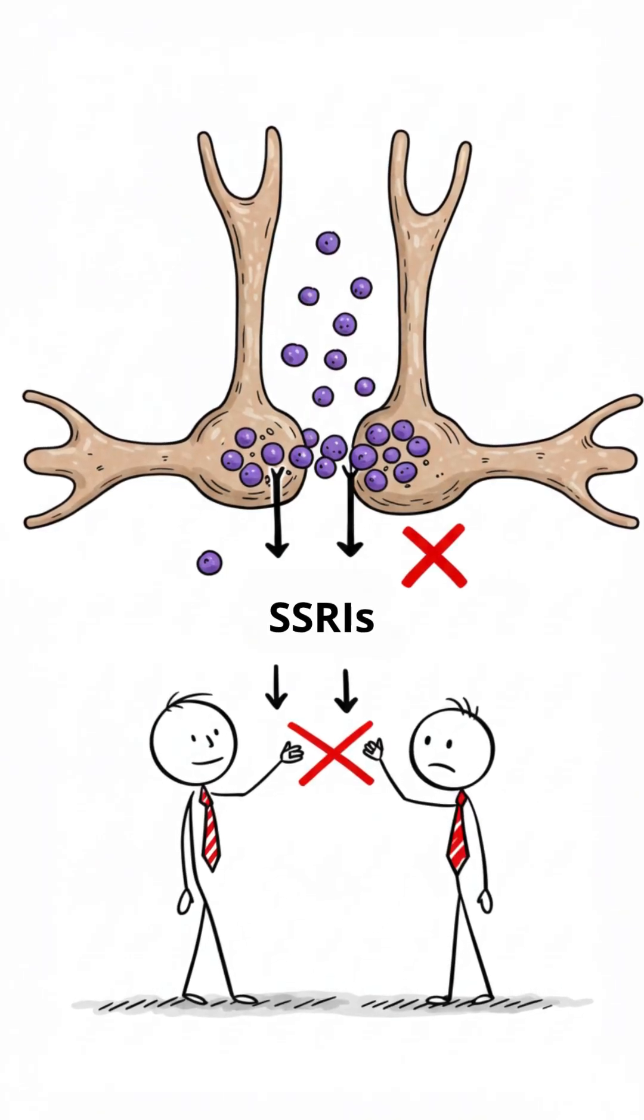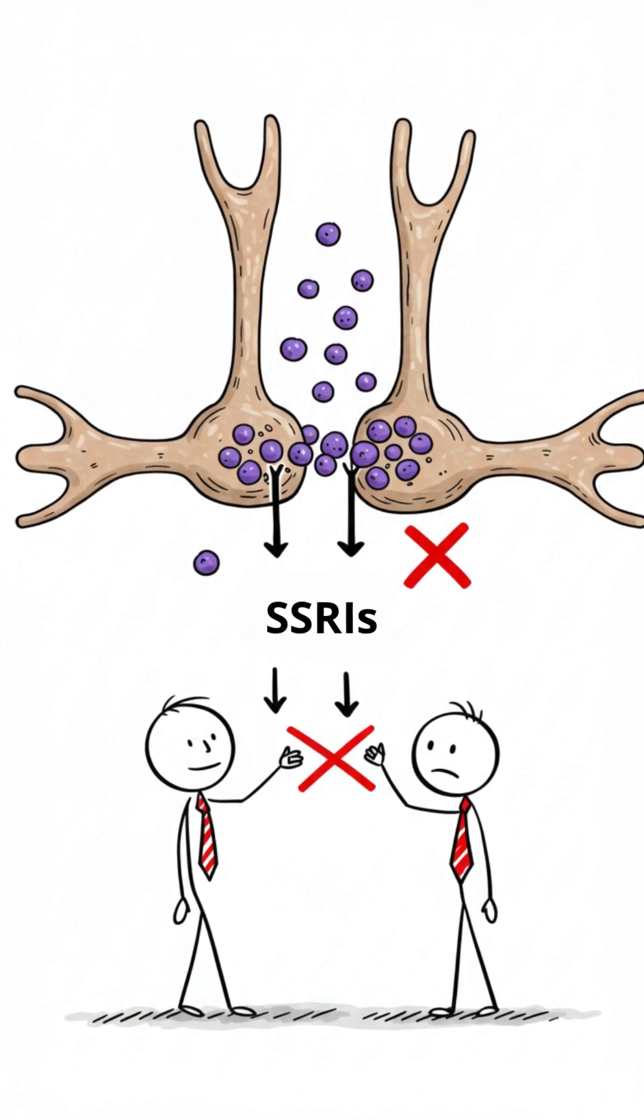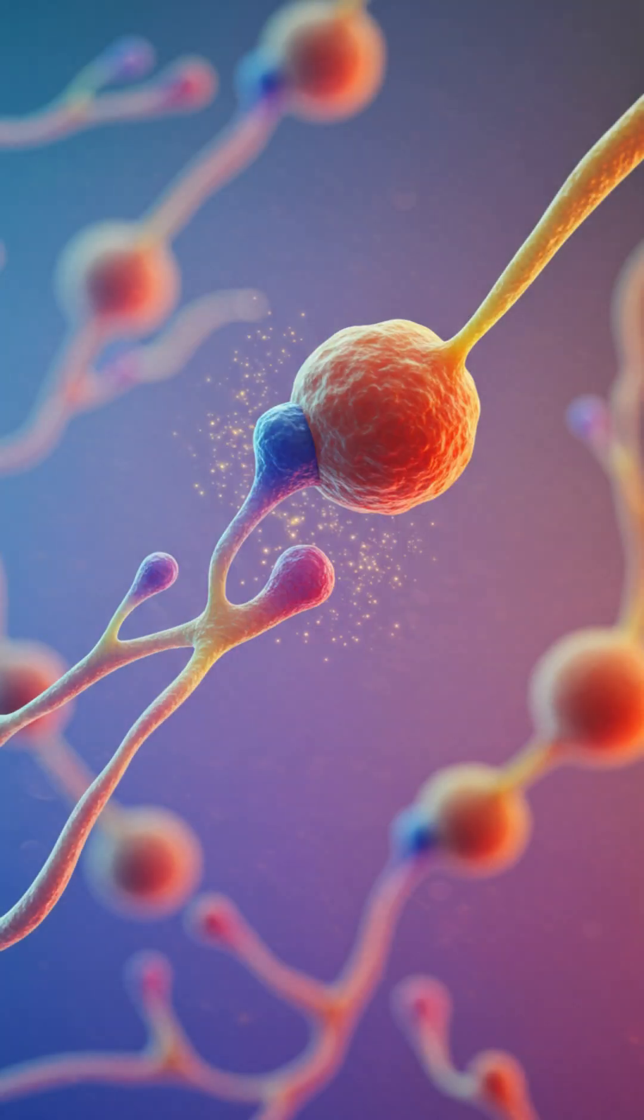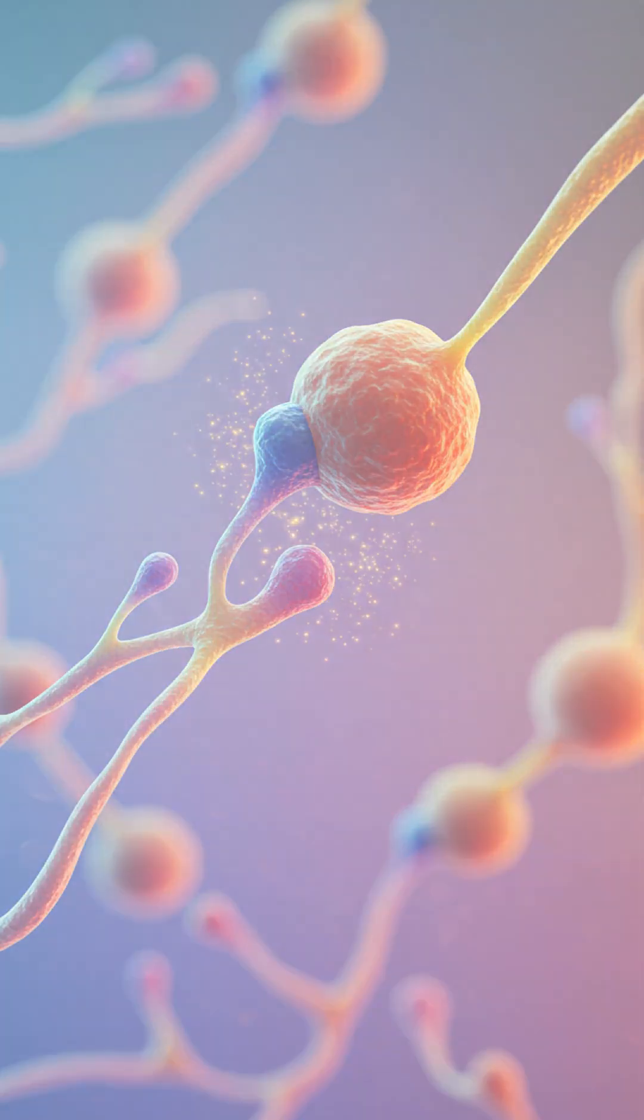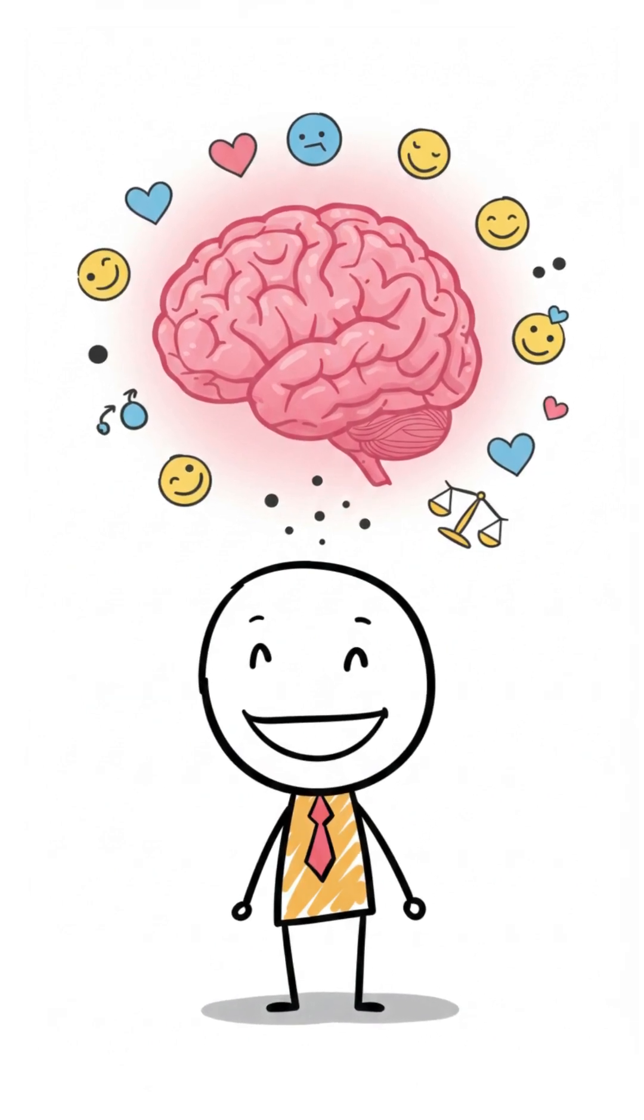The most common ones, the selective serotonin reuptake inhibitors, SSRIs, block the reabsorption of serotonin. That means more serotonin stays active in the connections between your brain cells, helping improve mood, reduce anxiety, and bring emotional balance.